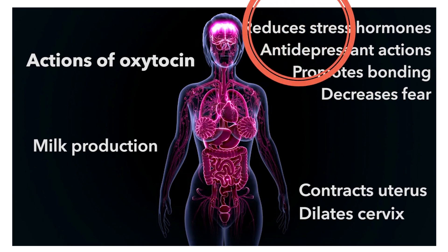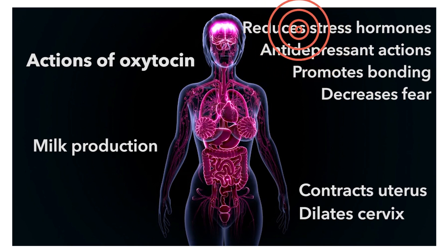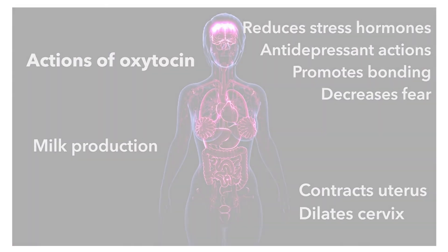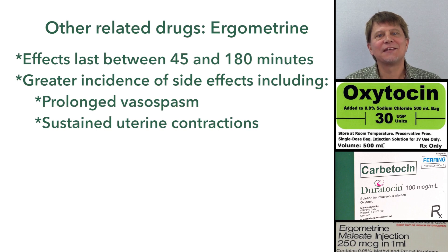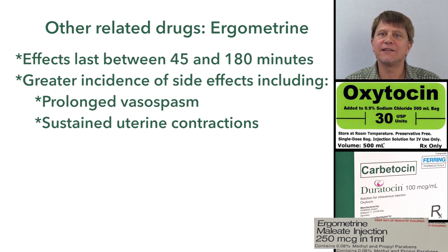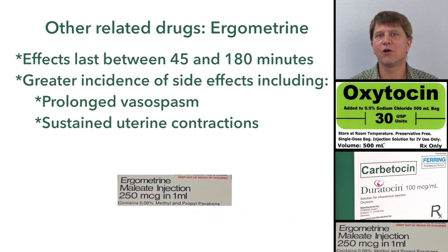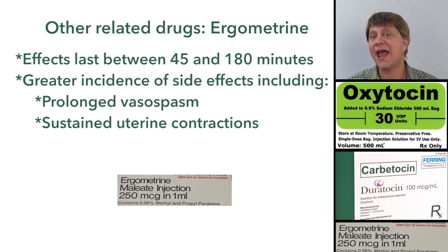Oxytocin can decrease stress hormones, has an antidepressant action, and is being investigated for the treatment of autism and drug and alcohol dependence. Oxytocin hasn't been approved for those uses yet, but expect that some oxytocin and oxytocin-like drugs will be approved in the future. Oxytocin has largely replaced ergometrine as the primary agent to increase uterine tone in acute postpartum hemorrhage and in difficult deliveries, though oxytocin and ergometrine can be used in combination in very difficult deliveries.